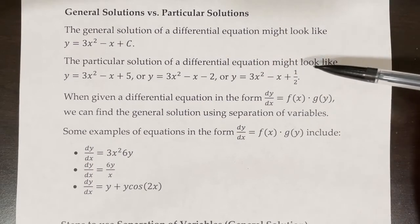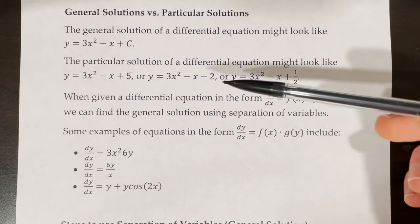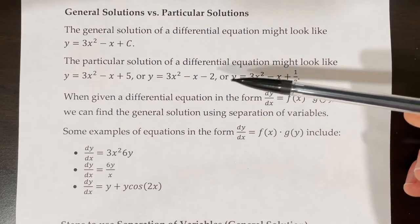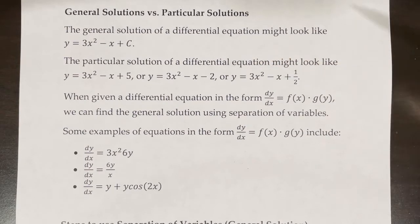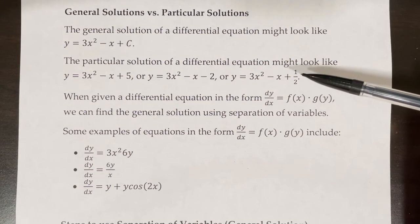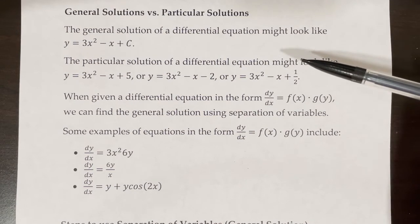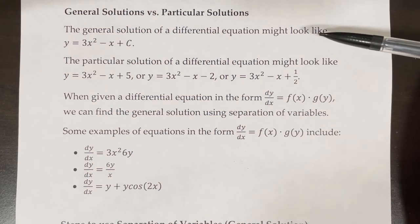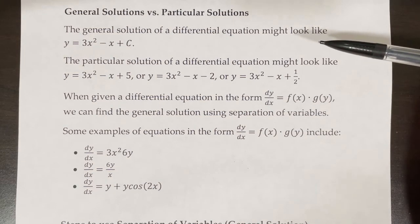The particular solution of a differential equation might look something like y equals 3x squared minus x plus 5, or y equals 3x squared minus x minus 2, or y equals 3x squared minus x plus one-half. So we have an actual number for c. In this video, we will focus on finding general solutions, so we will have a plus c somewhere in our answers.